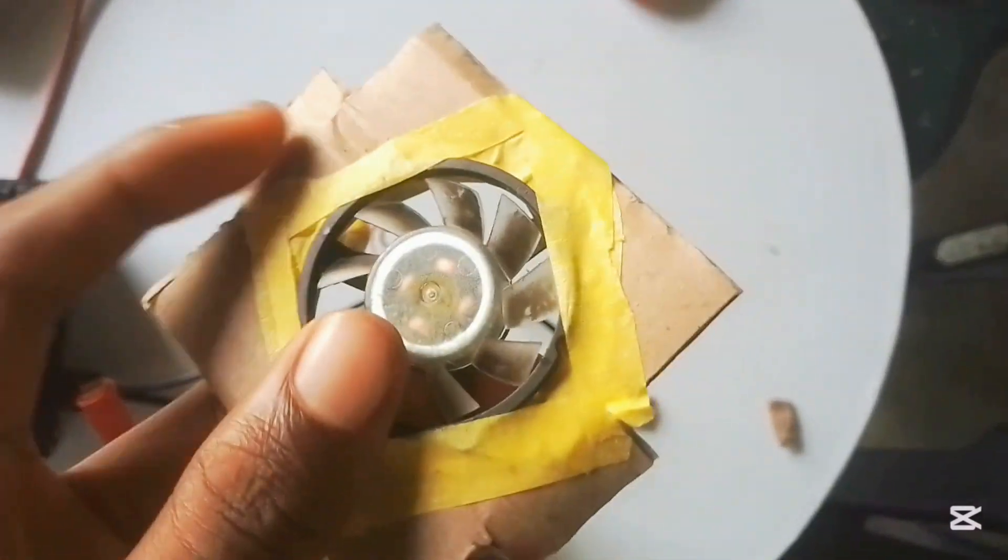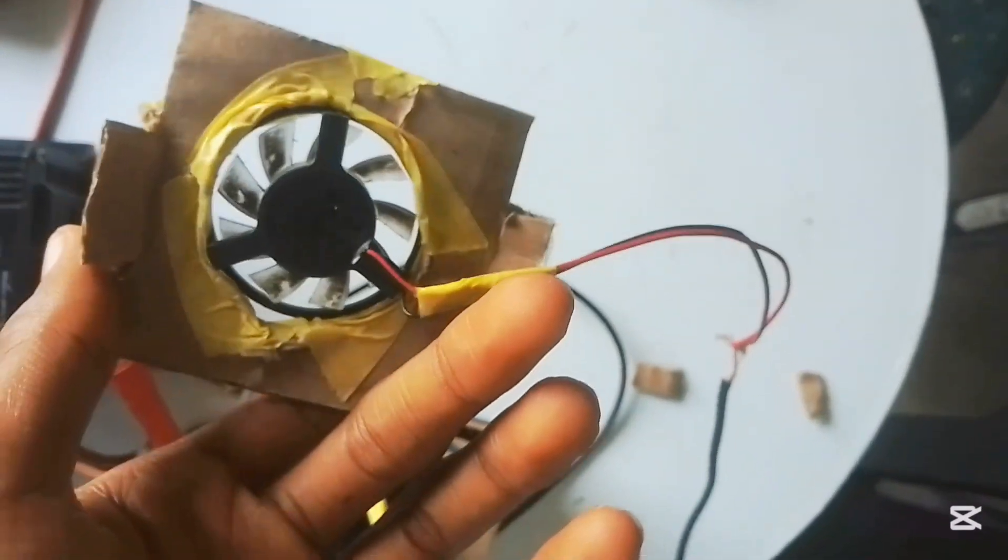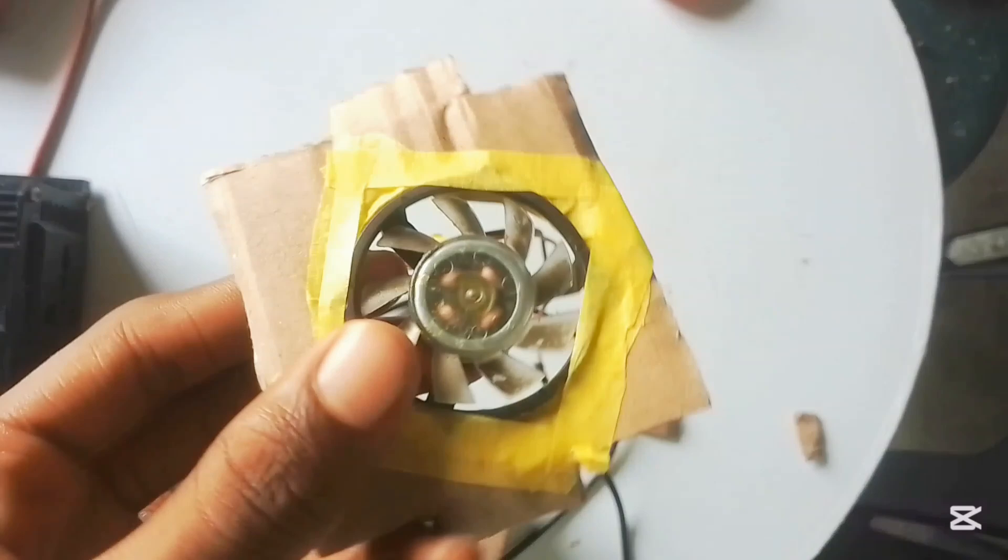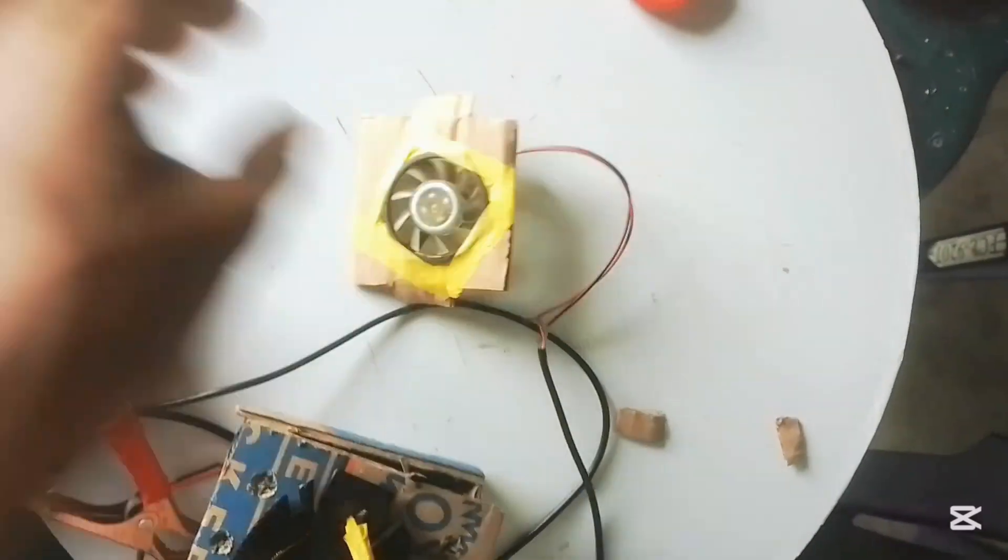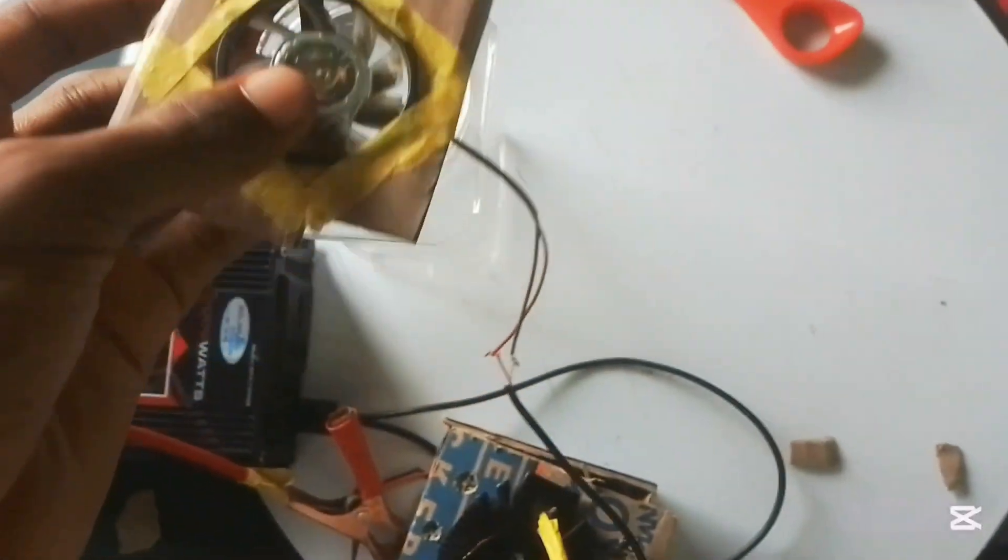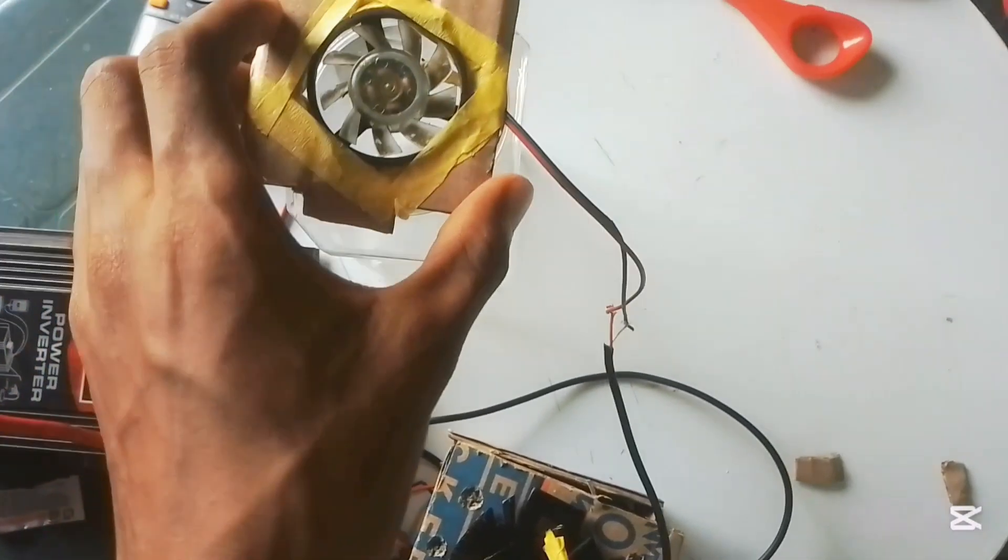So this is how the fan is going to be placed. The fan is going to be placed inside the cardboard box to be able to stand on top of the container. The fan is going to be placed on top of the container for it to blow air inside.